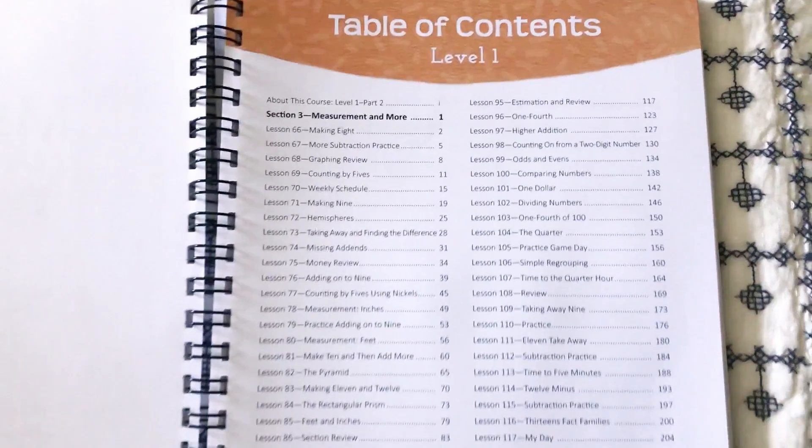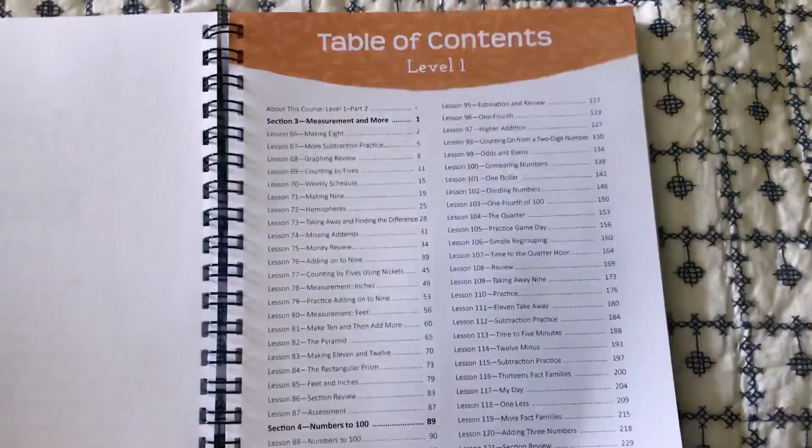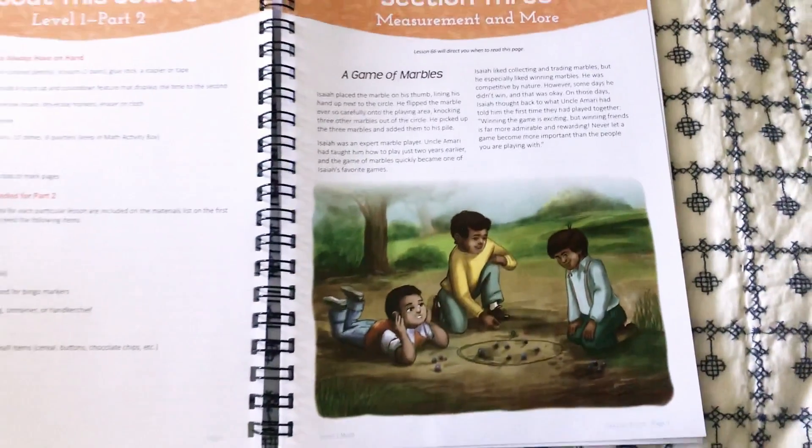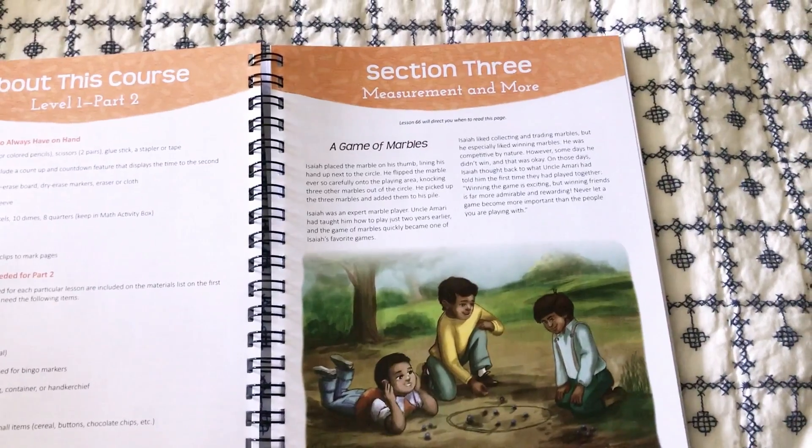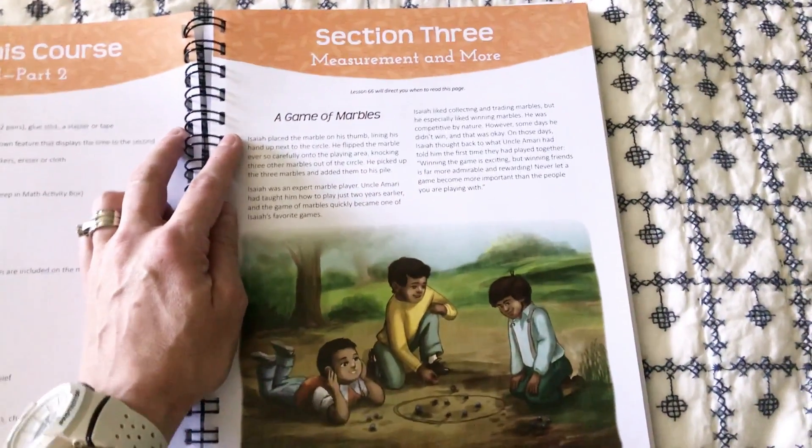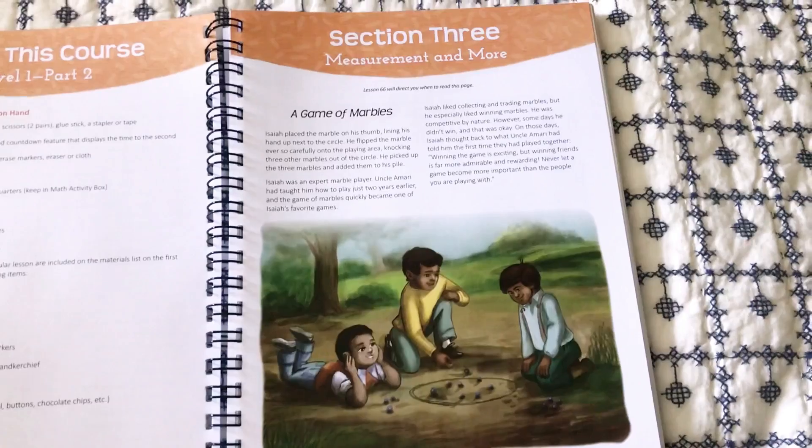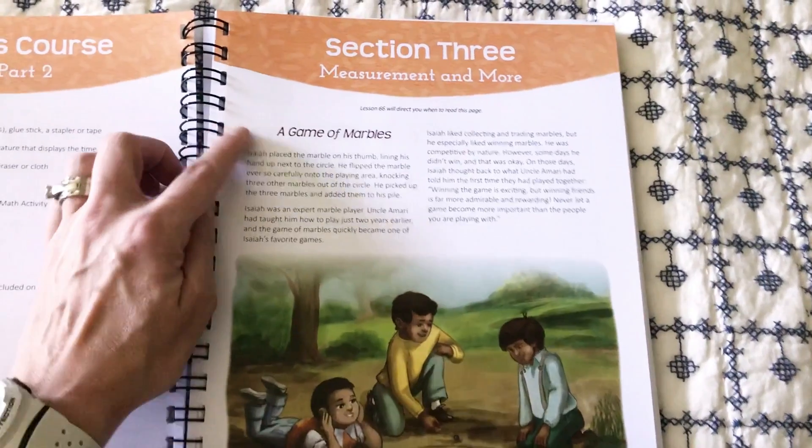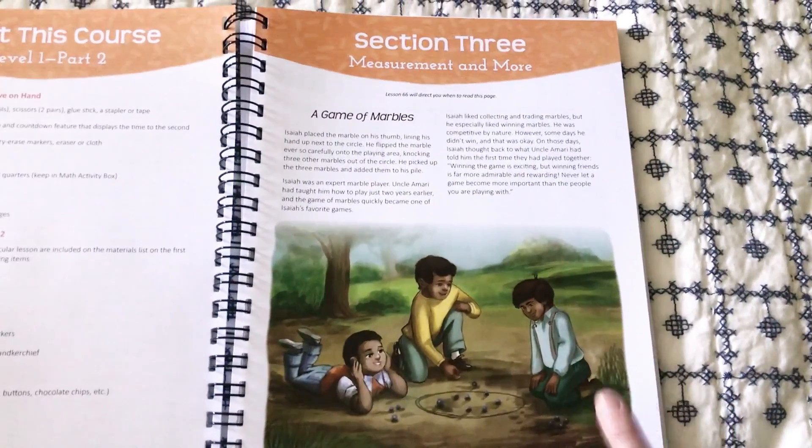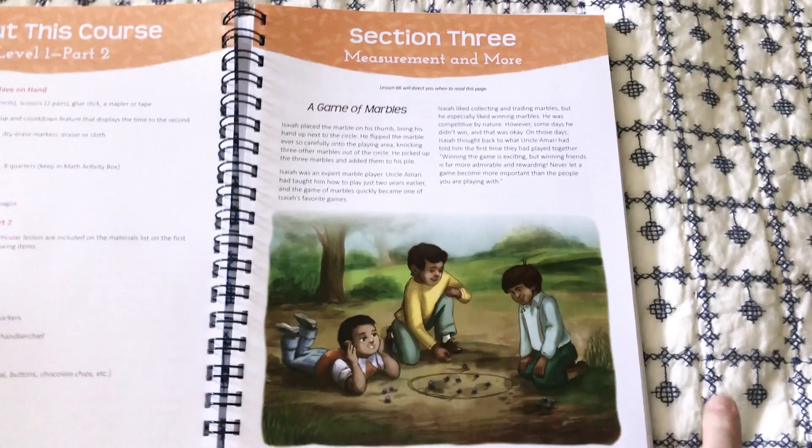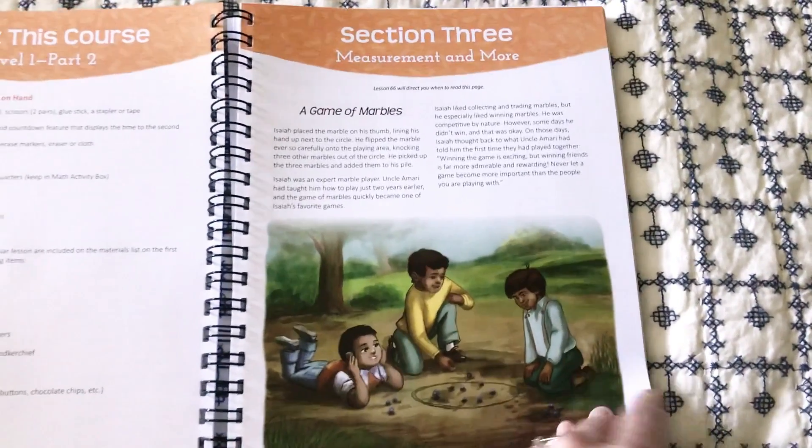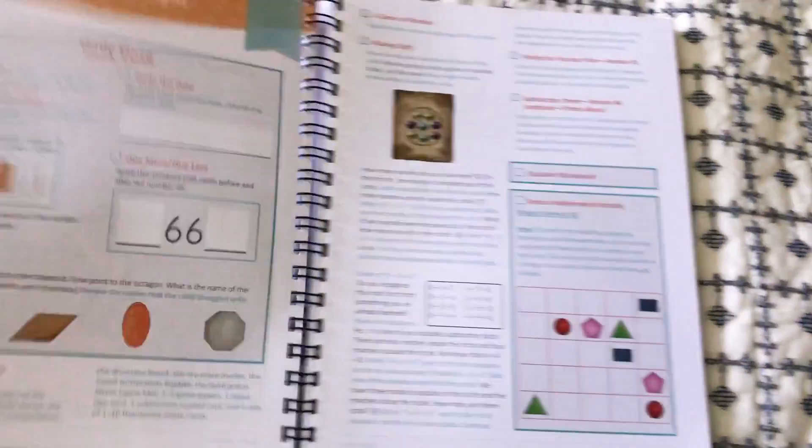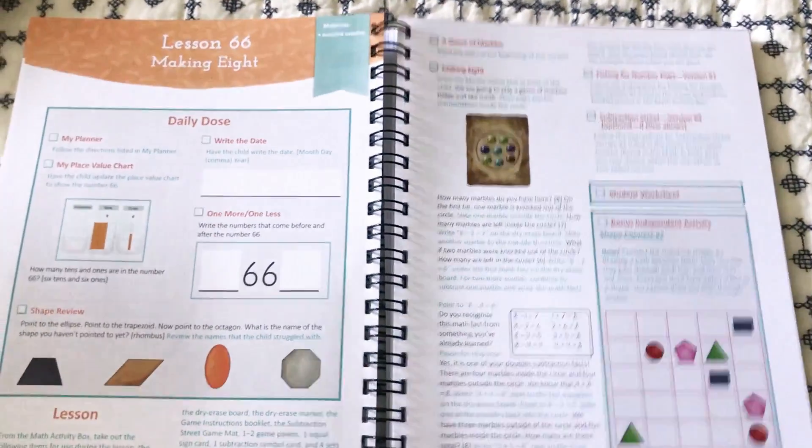So as I said in my Math K video, I love how they set up the math. They set them up in sections. And with each section comes a story with characters. And you use a set of manipulatives. So in this section, it's going to start out with the marbles. And it does come with the marble manipulatives. And you can see those in my Math 1, Part 1 video. I show all this. But these stories are super cute. And the story continues throughout the entire section.